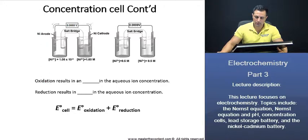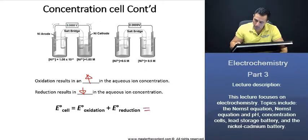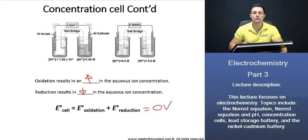Oxidation results in an increase in the aqueous ion concentration. And reduction results in the decrease in the aqueous ion concentration. Now, what about the standard cell potential? What would the value be for the standard cell potential? Well, since we have, since they're both exactly the same, we know then that our standard cell potential is just going to be zero volts. Now we can go to the next slide and we'll solve for that.